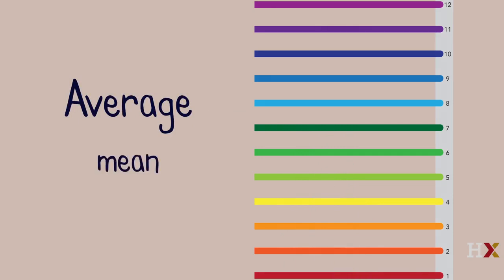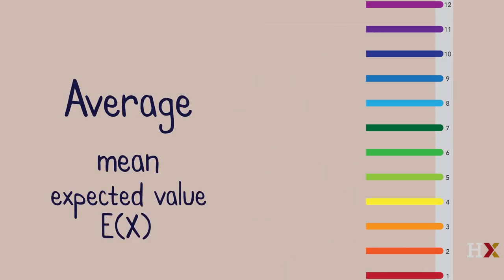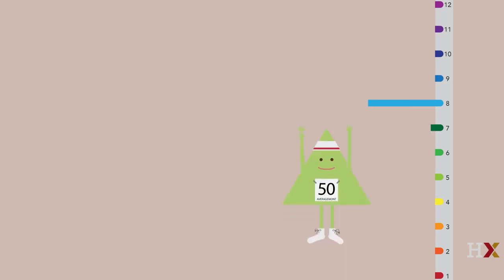There are several notions of average that are used in statistics. The most widely used is called the mean, or expected value. Imagine a large number of hypothetical jumps by John and tracking how many times he achieved each possible score.